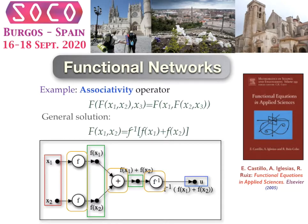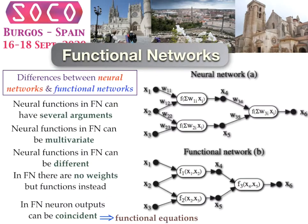To understand functional networks, I have this example — more details can be found in my book, Functional Equations in Applied Sciences. Basically, functional networks are a powerful extension of neural networks. The neural functions in functional networks can have several arguments and can be multivariate, the neural functions can be different from one another — whereas in neural networks they are identical — and there are no weights but functions instead. The neural outputs can be coincident, leading to a set of functional equations which have to be solved.